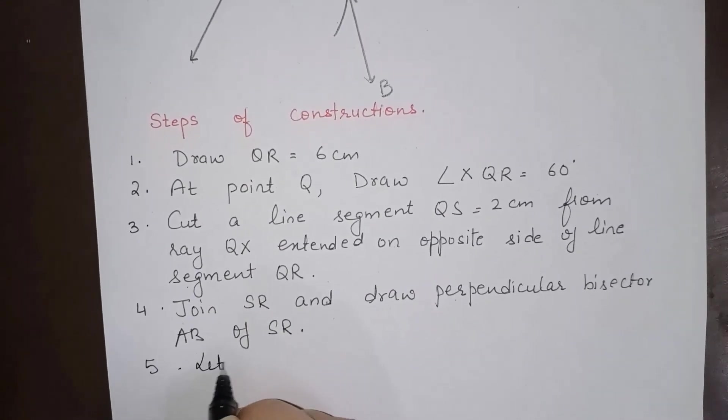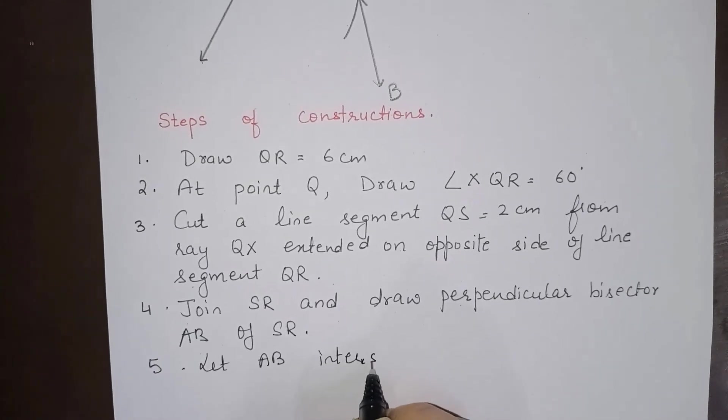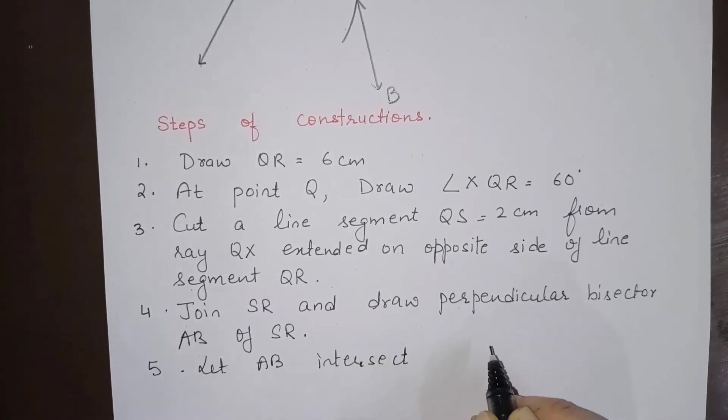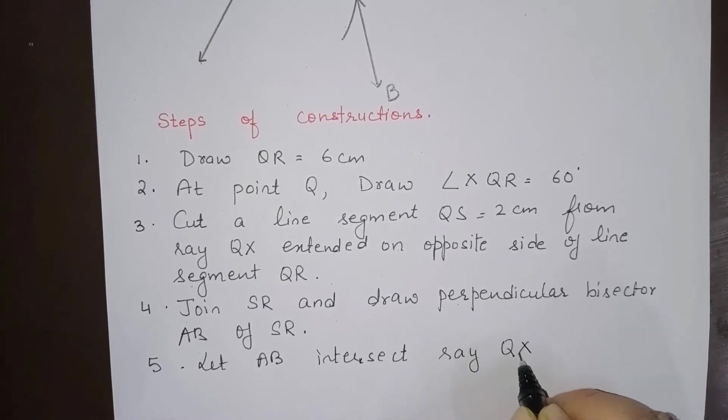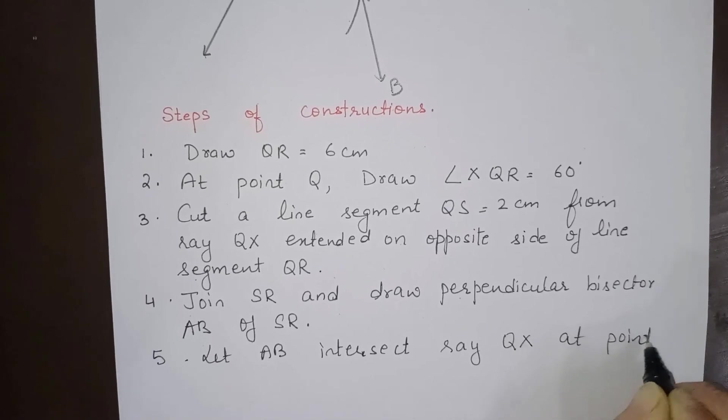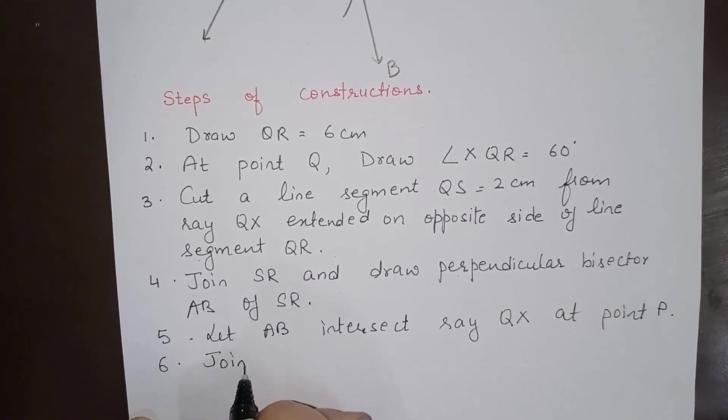Let AB intersect ray QX at point P. Join PR.